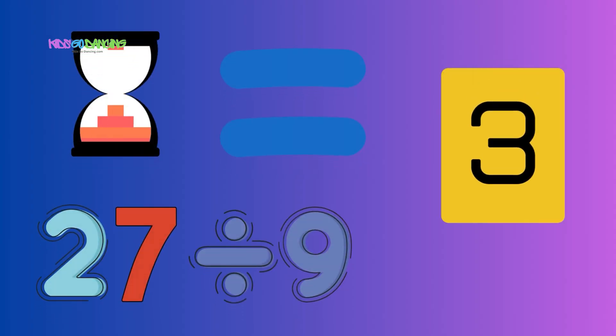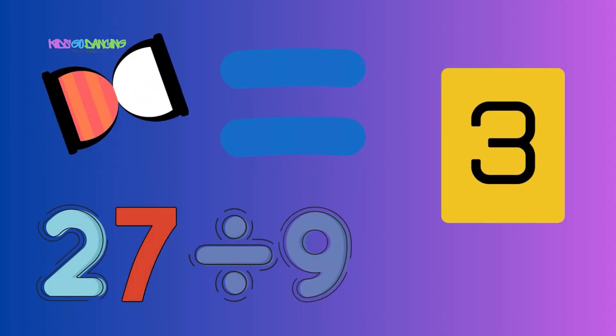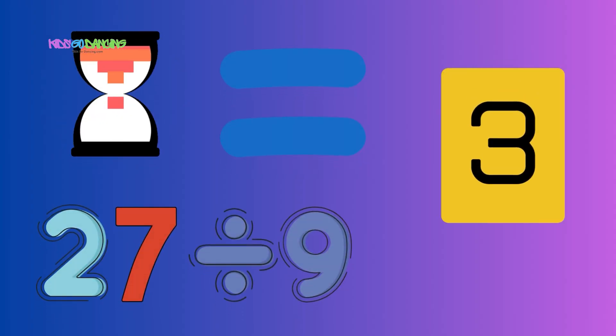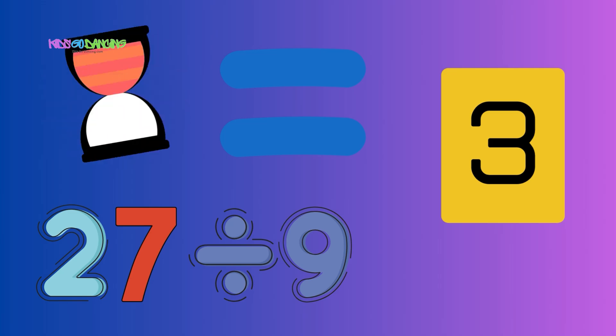27 divided by 9 is 3. Count them up: 1, 2, 3.